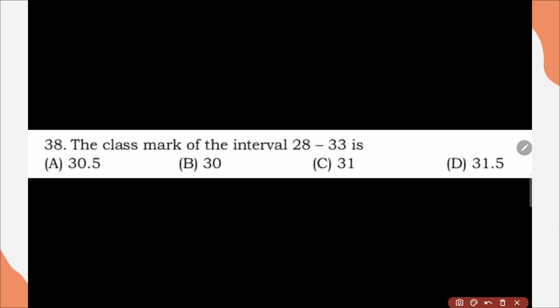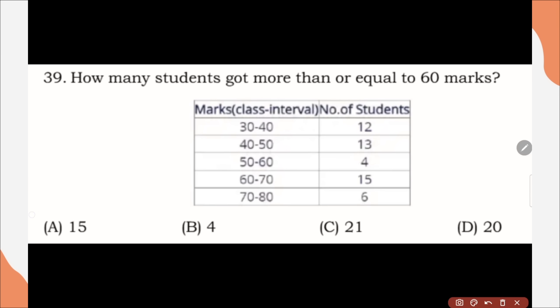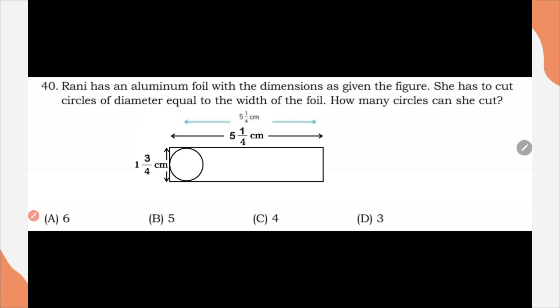Question number 38, the class mark of the interval 28 to 33 is? Correct option is option A, 30.5. Question number 39, how many students got more than or equal to 60 marks according to this table? Correct option is option C, 21. Question number 40, Rani has aluminum foil with the dimension as given in figure. She has to cut circle of diameter equal to the width of foil. How many circle can she cut? Here, correct option is option D, 3.